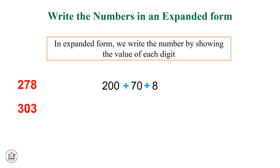Another example: 303. The hundreds digit is 3, so I will write 300 plus. The number of tens here is 0, so I will write 0 in that tens digit. And the number of ones here is 3, so I will write plus 3.